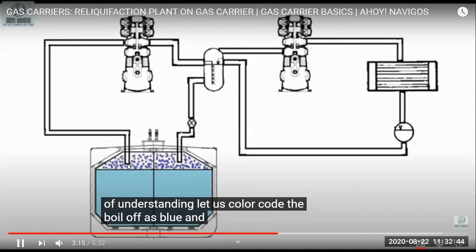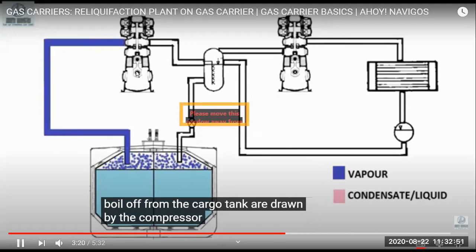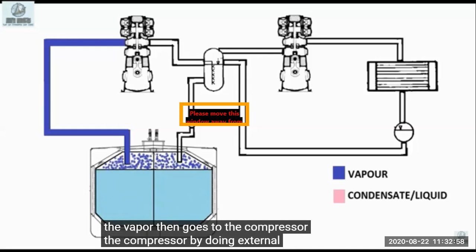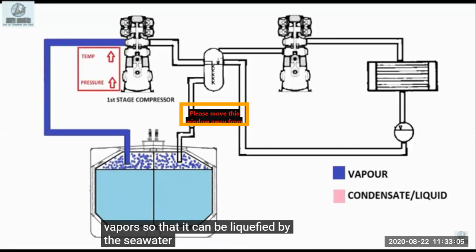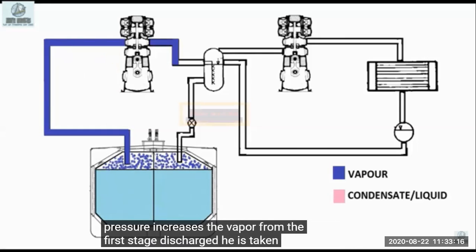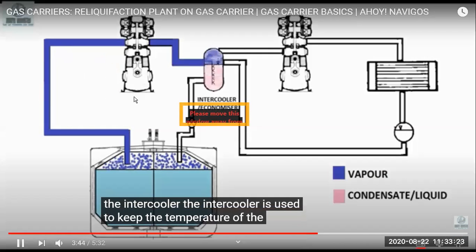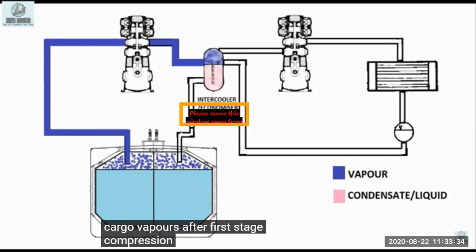The gas is boiling off from the tank. The boil-off is taken from the tank and goes to the compressor. The compressor, by external work, raises the pressure of the cargo vapors and the gas gets heated — so temperature increases and pressure increases. It will start moving toward liquid state, though some vapors will still remain. That's why we have a two-stage compressor, because the first stage alone cannot convert all the gas to liquid. The intercooler then cools down the gas and increases the efficiency of the plant.